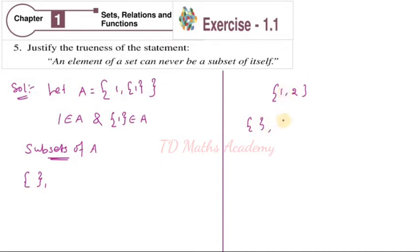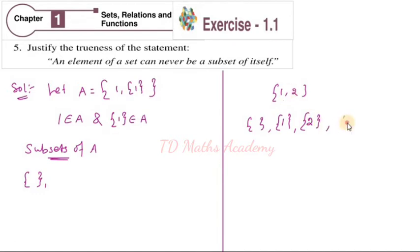The subsets of {1, 2} are: the null set, {1}, {2}, and {1, 2} itself. So here we know 4 subsets are there.